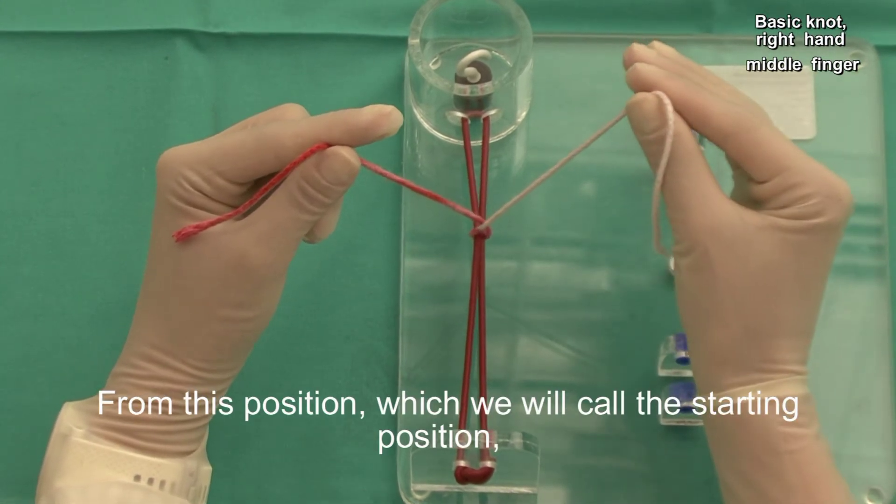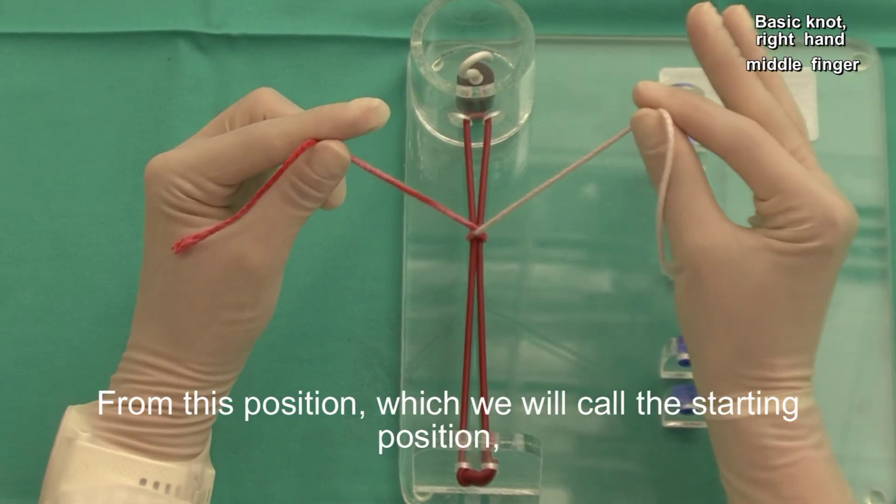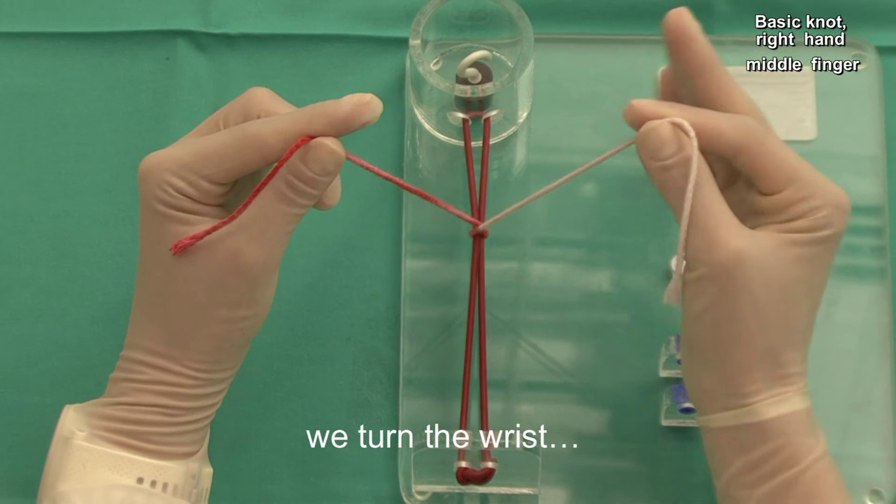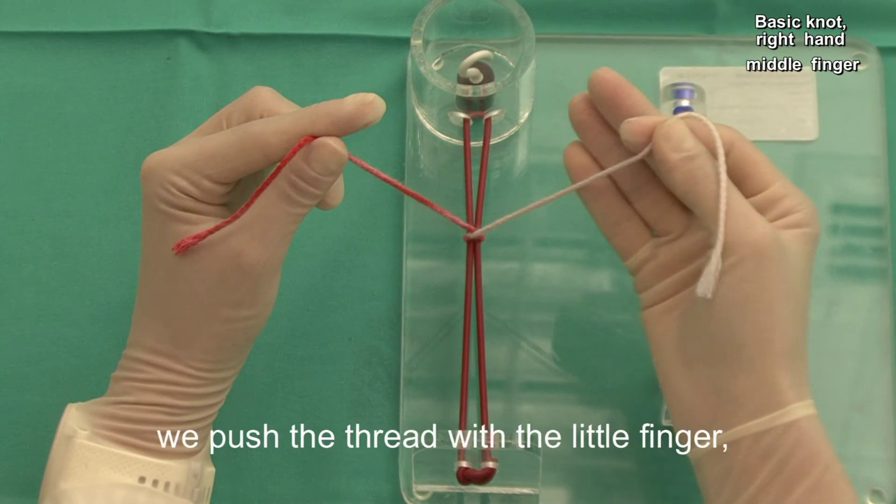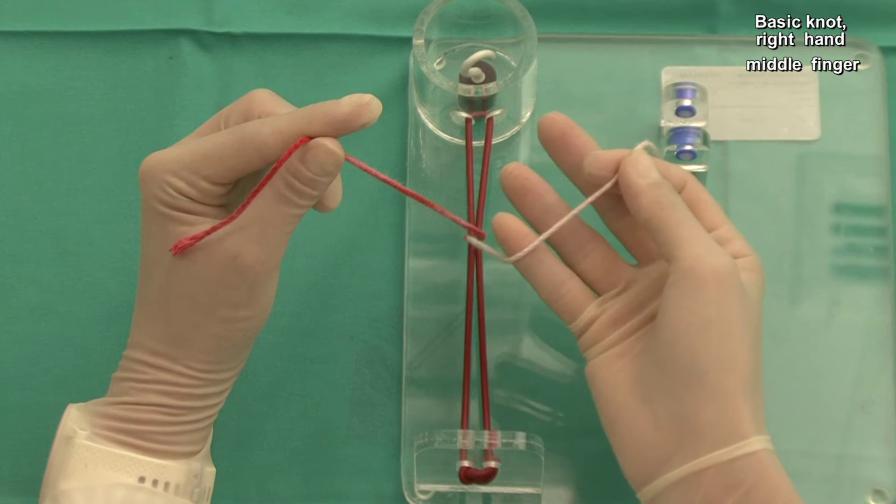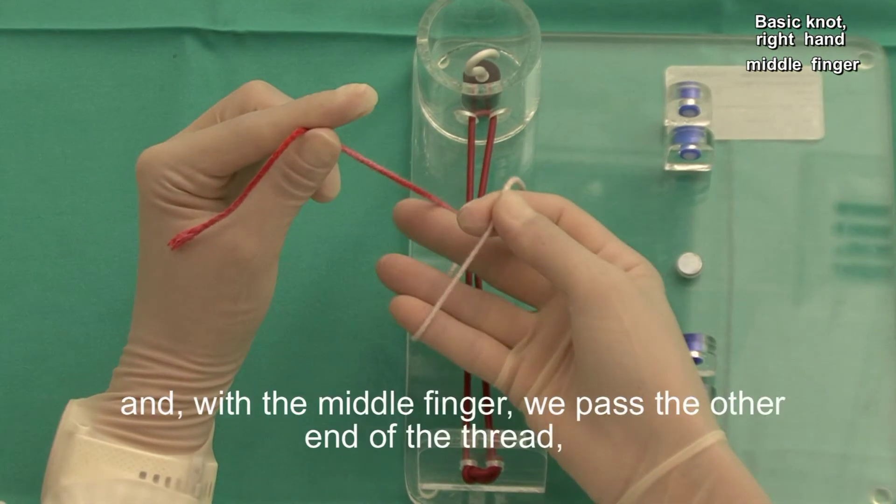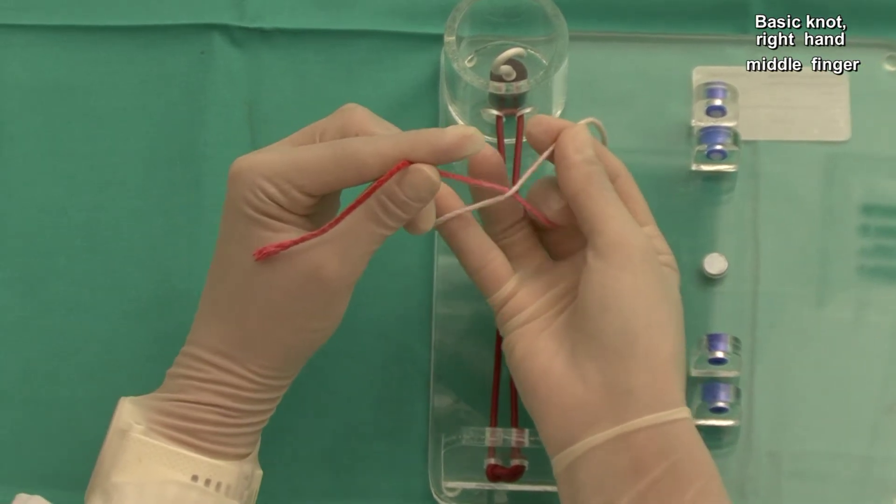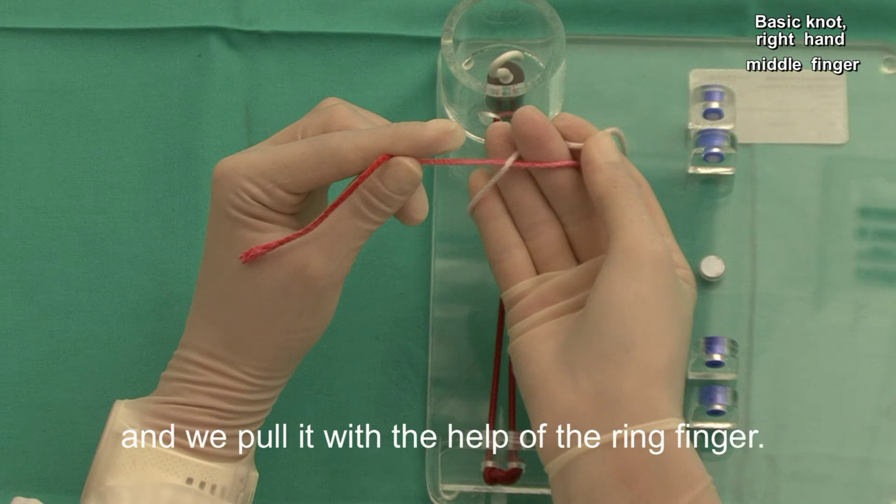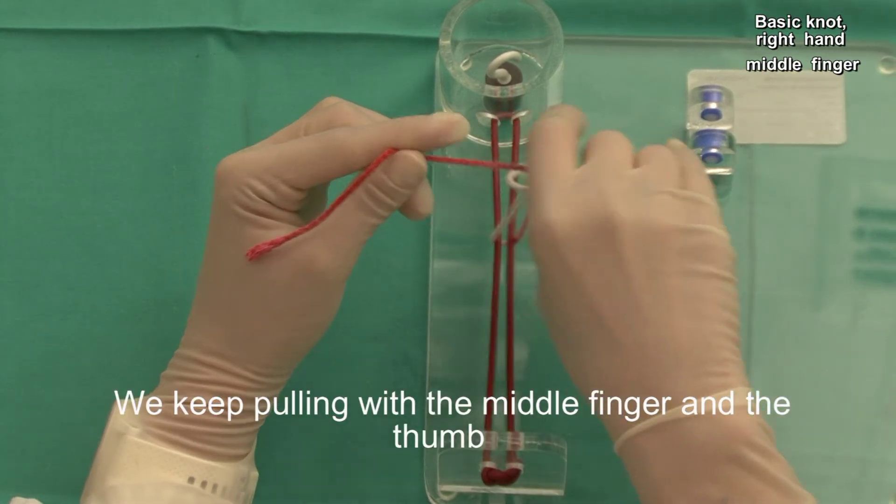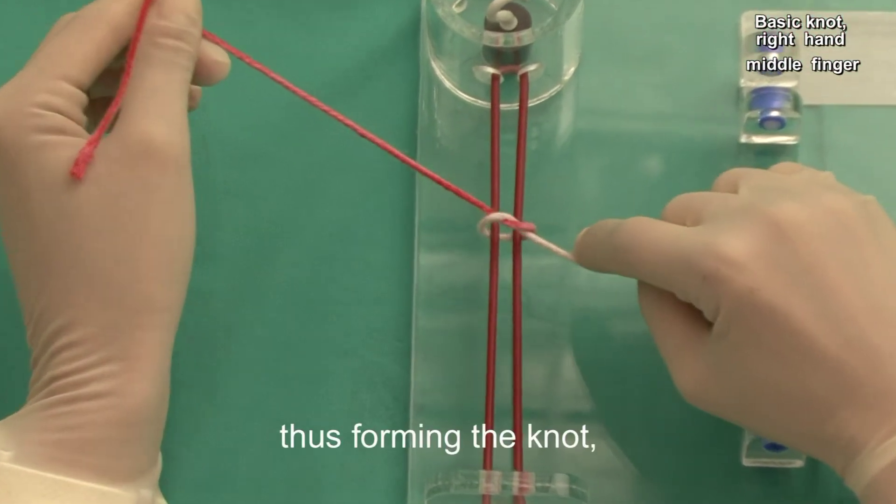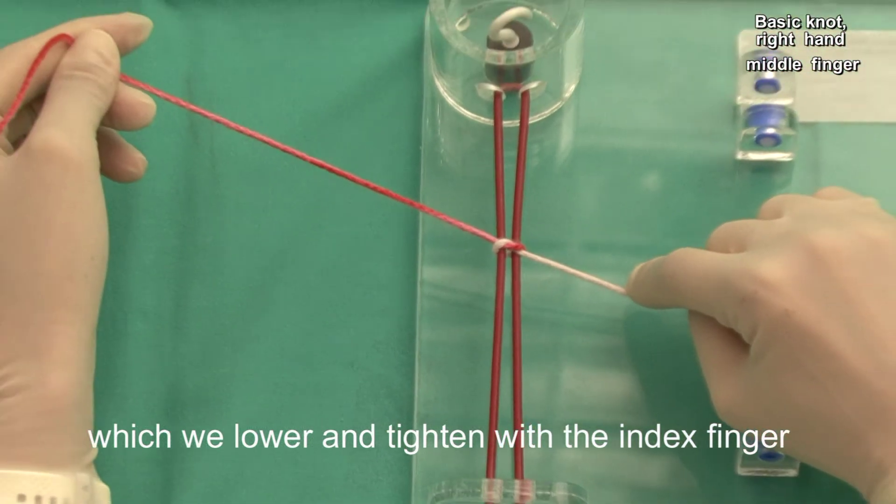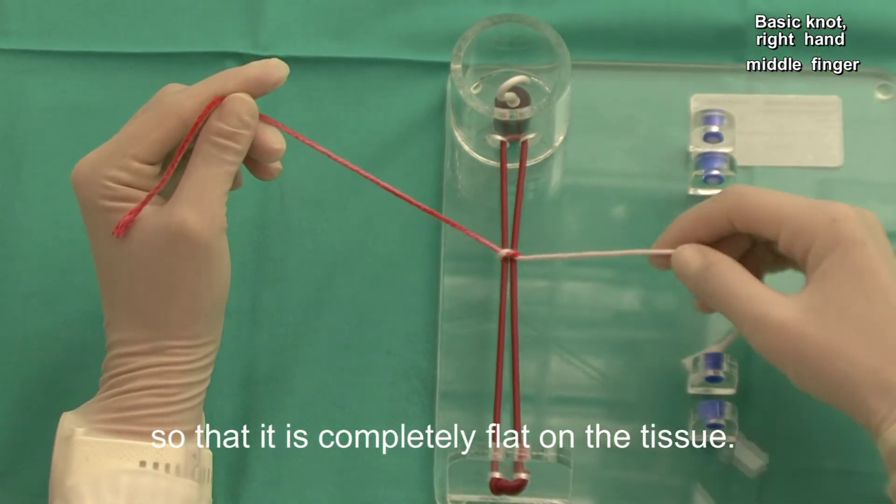From this position, which we will call the starting position, we take the end of the thread between the index finger and the thumb, we turn the wrist, we push the thread with the little finger and, with the middle finger, we pass the other end of the thread and we pull it. We keep pulling with the middle finger and the thumb, thus forming the knot, which we lower and tighten with the index finger so that it's completely flat on the tissue.